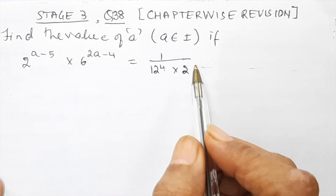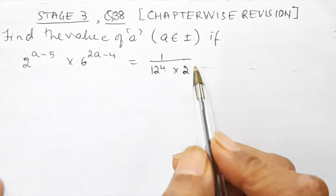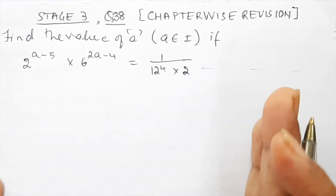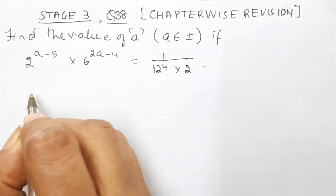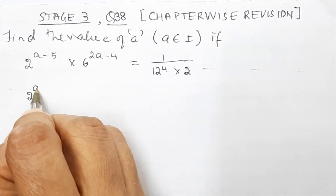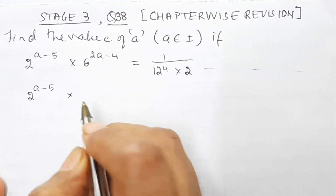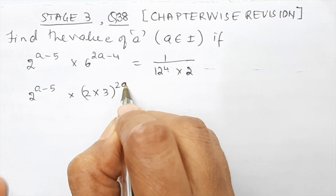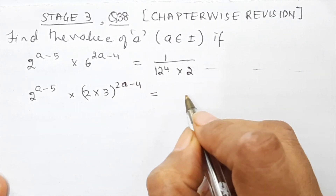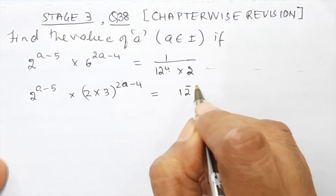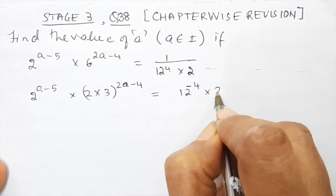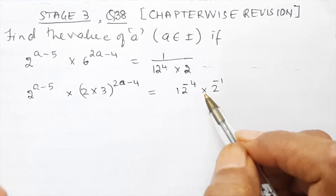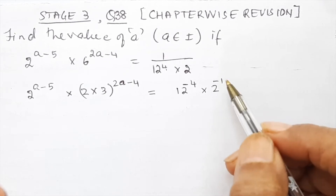Whenever we have a question like this, where we have to find the value of a, you have to make sure that the bases are the same on both sides of the equation. So if we have 2 to the power (a minus 5) here, then this 6 becomes 2 into 3, to the power (2a minus 4). And that is equal to 12 to the power minus 4 into 2 to the power minus 1, because we know that 1 upon a to the power n is equal to a to the power minus n.